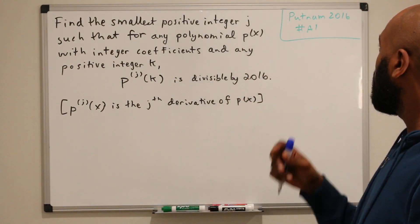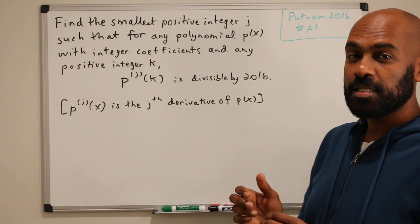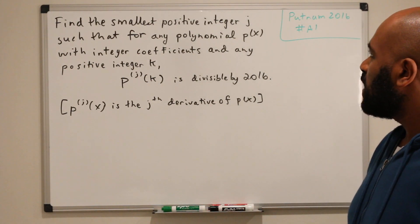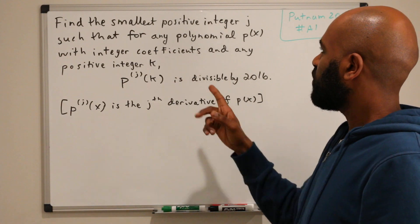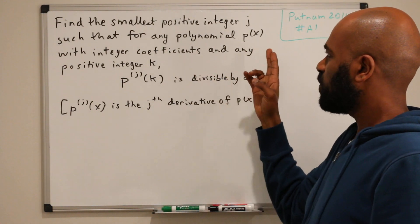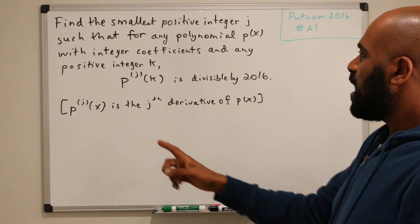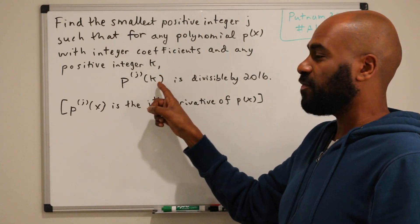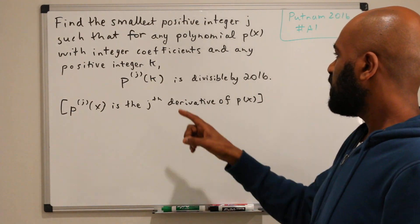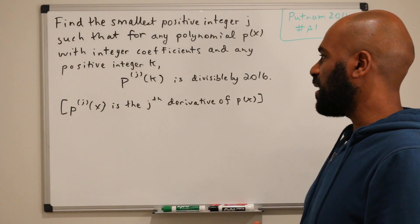Alright, so we're going to work on Putnam 2016 number A1 and it says find the smallest positive integer j such that for any polynomial p(x) with integer coefficients and any positive integer k, when we plug in k into the jth derivative of the polynomial, that expression is divisible by 2016.